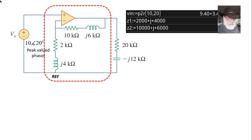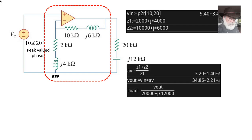Next, I compute the voltage gain: Z1 plus Z2 divided by Z1. It is a complex number. Multiply the input phasor by that voltage gain. That gives us the output voltage as a phasor. Divide that output voltage phasor by the impedance 20 kilos minus J12 kilos and we get the current in the load on the right of the circuit.